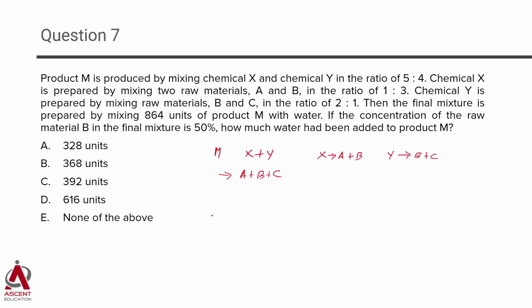Now, they have talked about M is not the end of the story. There is a final mixture. We'll call it as F. The final mixture is prepared by taking 864 units of M. And we are going to add some units of water to it. That's how the final mixture is obtained.